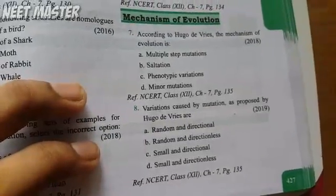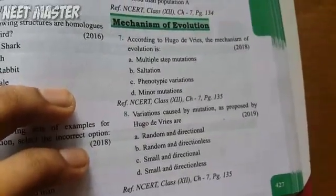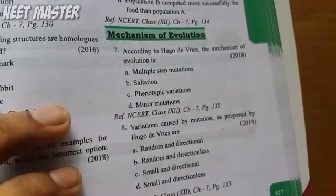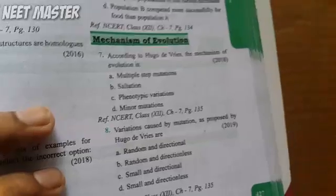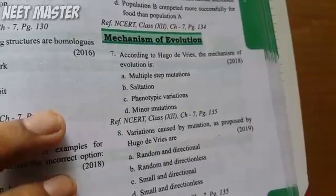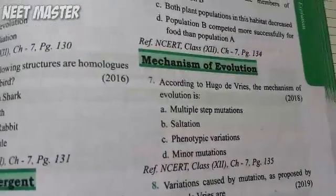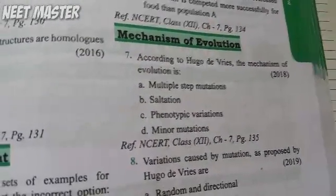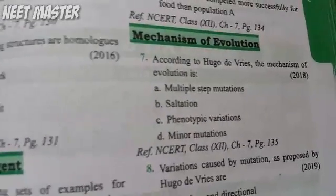The answer is saltation. Darwin said minor variations, but Hugo de Vries proposed single-step large mutations — saltation — meaning species arise by large mutations in one step. This is Hugo de Vries' multiple step mutation theory — saltation.